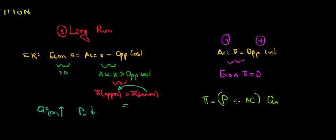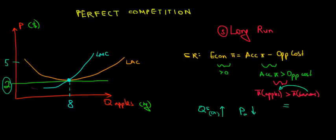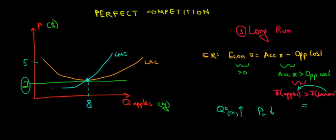By definition, to achieve zero economic profit, this can only happen if the price is equal to the average cost in the long run. And that happens to be at the minimum of the long-run average cost.